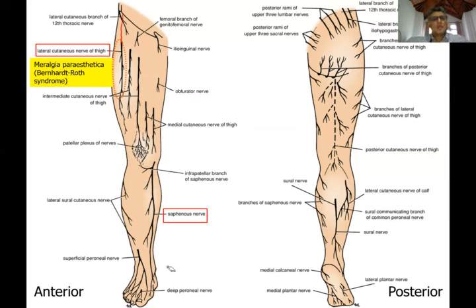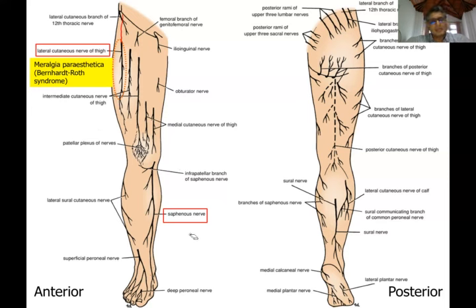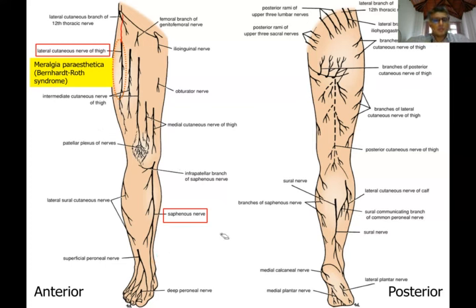An important clinical point about the saphenous nerve is that it is very closely related to the great saphenous vein. There is a small surgery called venous cutdown of the great saphenous vein at the ankle. During that procedure, you give local anesthesia — local injections with lignocaine — to block this nerve, and when you open up during surgery you will find the nerve. The saphenous nerve supplies this area of the leg with the L4 segment.